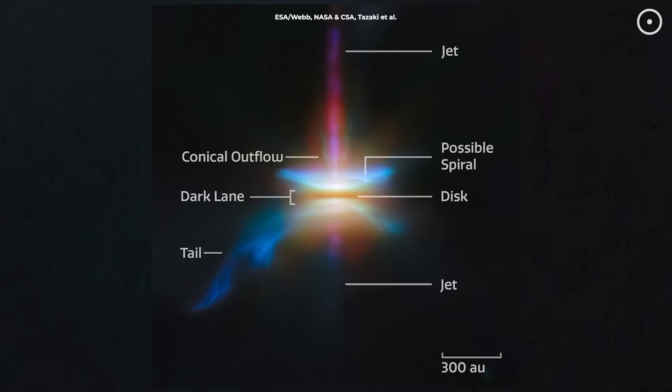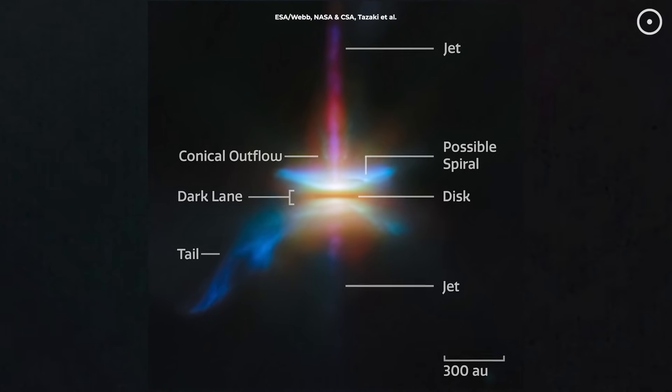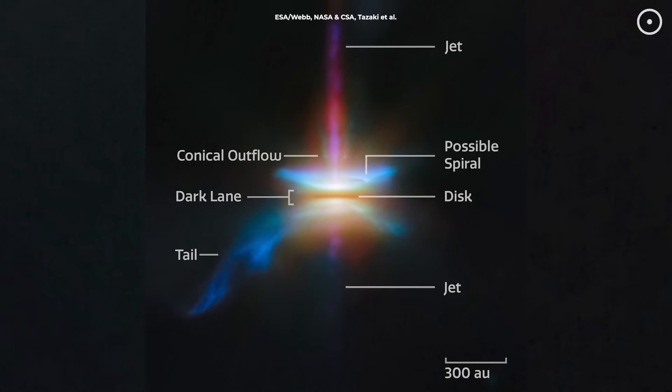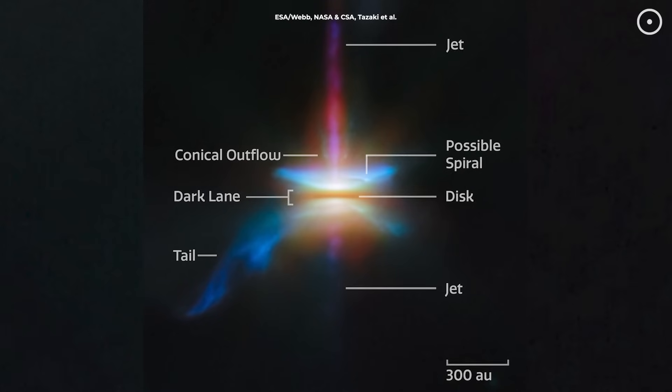About a thousand years ago, another star might have flown past HH-30, close enough to leave its gravitational fingerprint in the form of these spiral patterns.